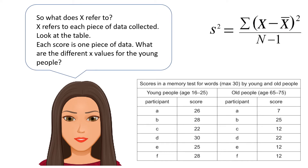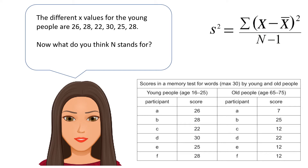So what does X refer to in the equation? X refers to each piece of data collected. Each score is one piece of data. The different X values for the young people are 26, 28, 22, 30, 25, and 28.